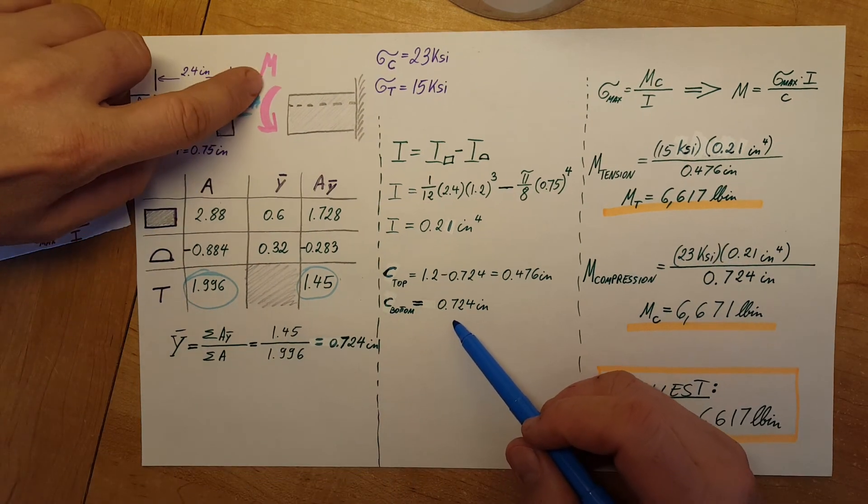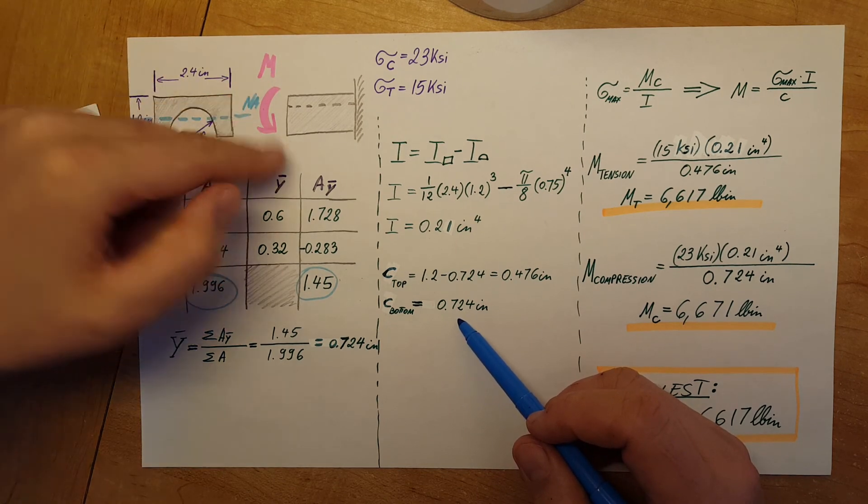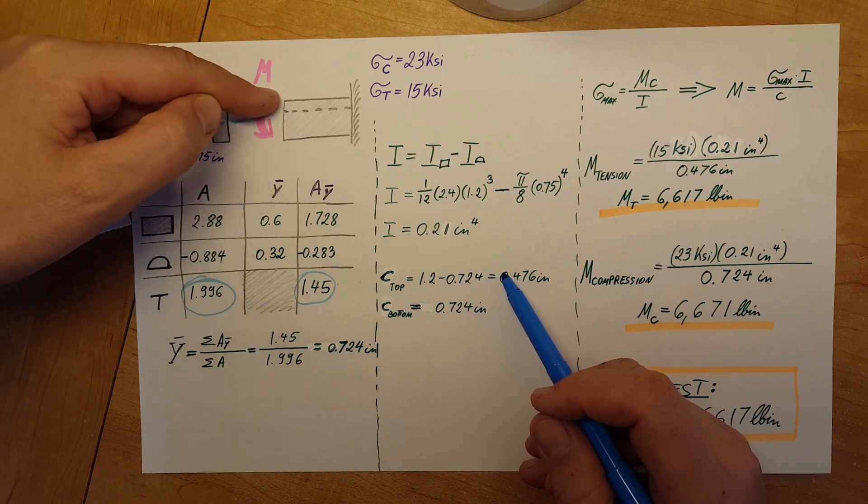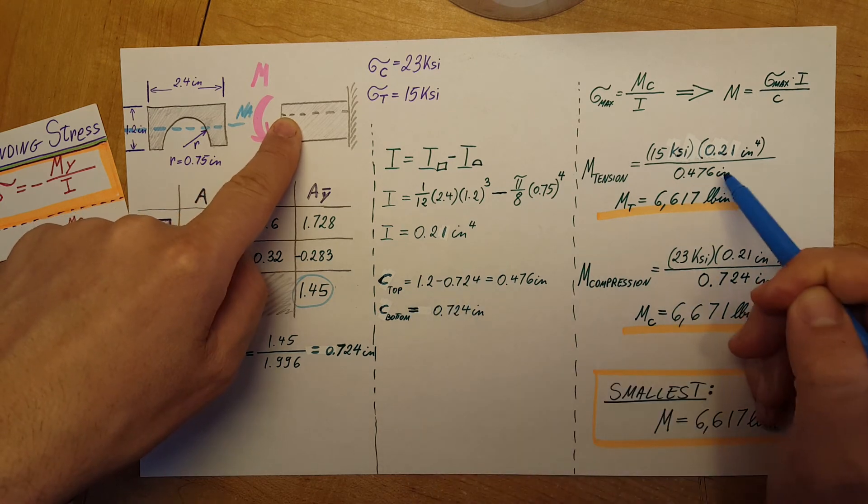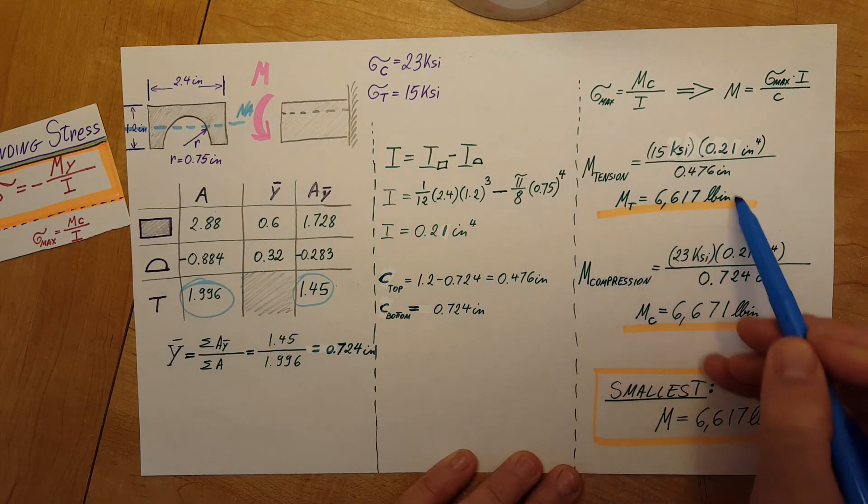Now we have to pick the right C. Which way is tension and which way is compression? The moment is going from top towards the bottom, so it's compressing here and stretching here. We need to pick C top for tension. Plug it into a calculator and here is our value.